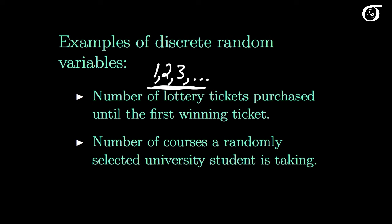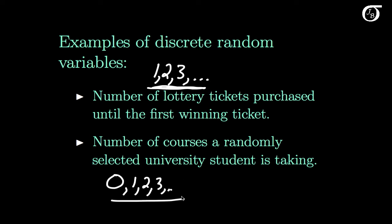How about the number of courses a randomly selected university student is taking? The possible values are 0, 1, 2, 3, and so on up to some maximum — maybe 5, 6, 7, or 8, depending on the university. In some situations a person could still be considered a university student taking 0 courses, for instance some graduate students. That is still a countable number of values, so it is still a discrete random variable.